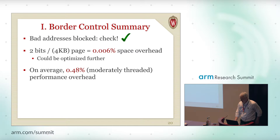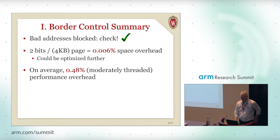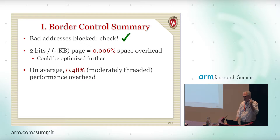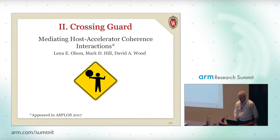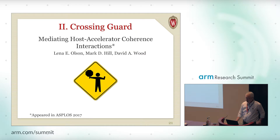In summary, for border control: we can block bad accesses — reads or writes — with two bits per 4K page, so a tiny amount of space overhead. We do have to check them by accessing the border control cache, which could miss, so there will be some overhead on cache misses. For some simulation data, the overheads are quite low. That's border control — dealing with reads and writes to addresses that you weren't supposed to have access to.